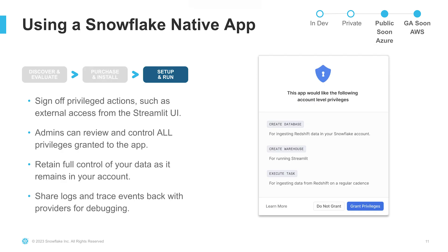Once you've installed your application, you can decide what an application can do in your account by granting it account-level privileges or object-level permissions. As the account admin, you have full visibility into what the application does inside your account. So that was a quick overview of what's possible today and how to build and use applications with the Snowflake Native Apps Framework.